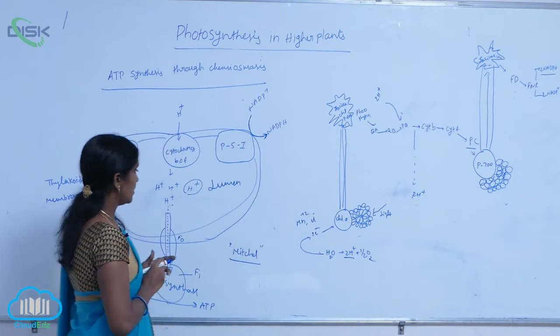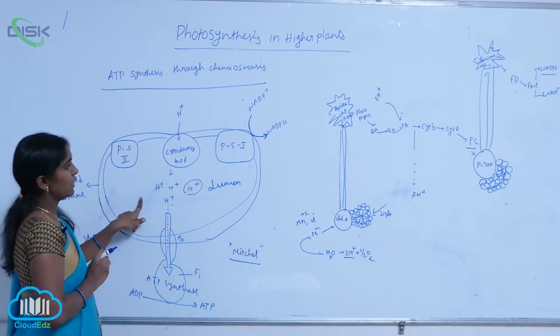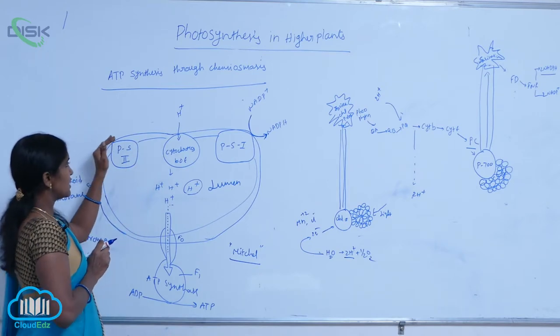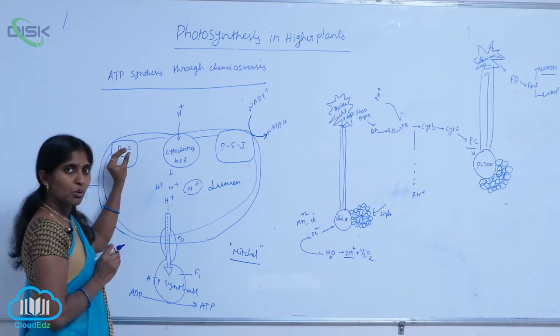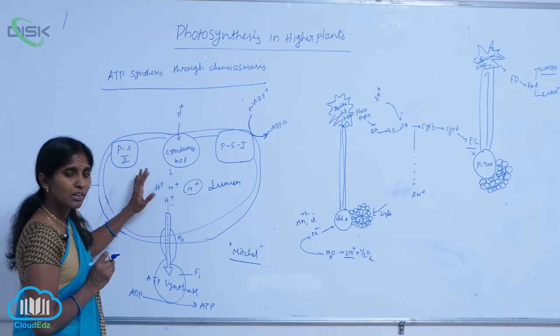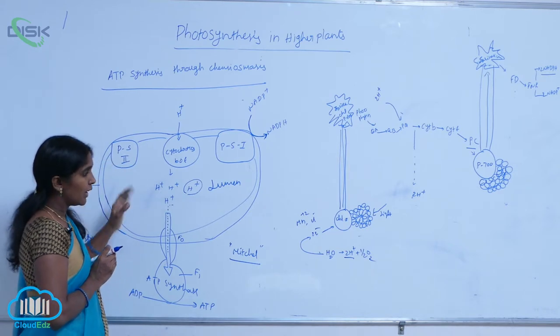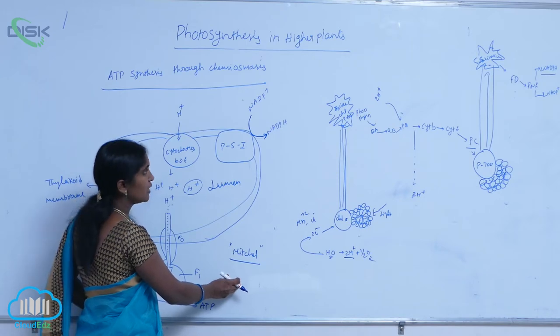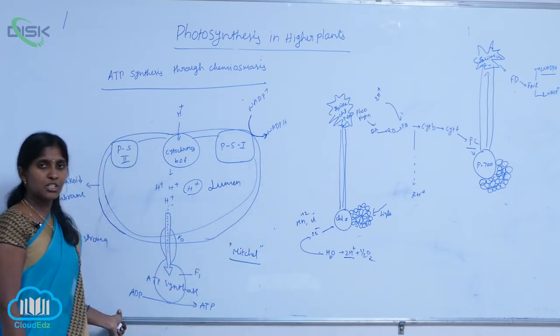From stroma to lumen, protons enter through the Q cycle. Additionally, when the water molecule is cleaved, protons are also translocated into the lumen. These protons from the stroma are then utilized for NADPH reduction.